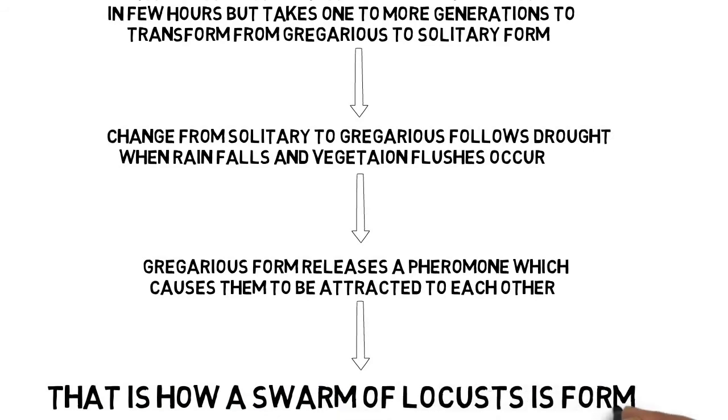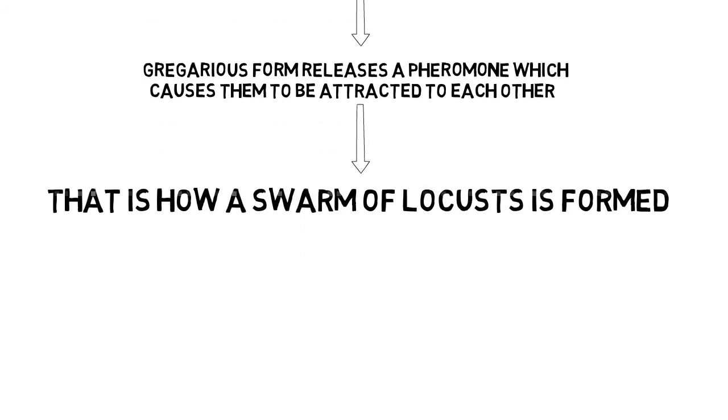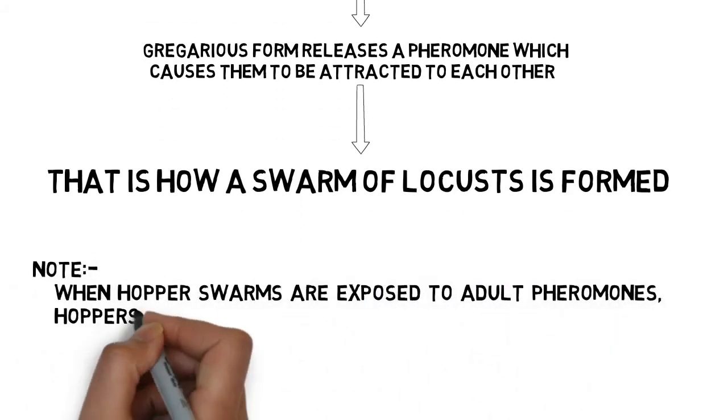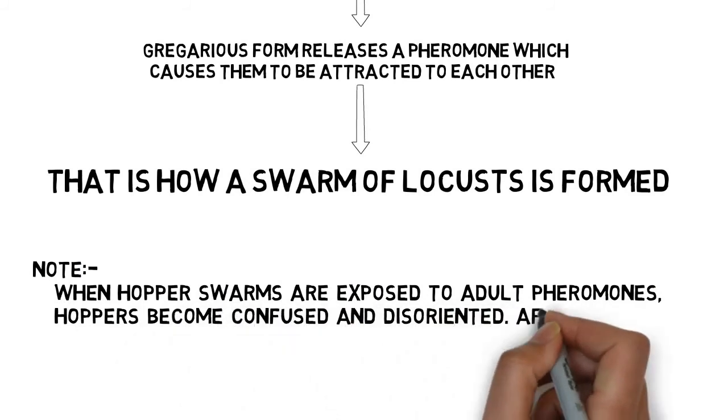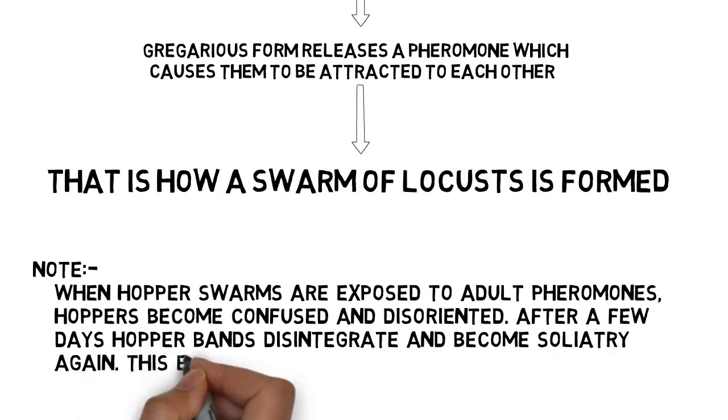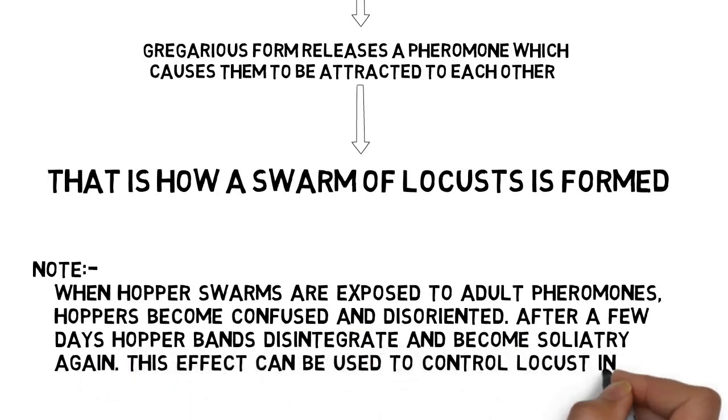The nymphal pheromone is different than the adult one, so when hoppers are exposed to adult pheromone, hoppers become confused and disoriented as they apparently can no longer smell each other, though visual and tactile stimuli remain. After a few days, the hopper bands disintegrate and those escaping radiation become solitary again. This effect could aid locust control in future.